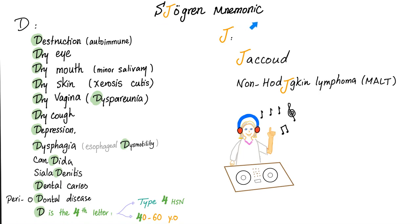Now to the mnemonic. Sjogren's syndrome has the J — please add a D, so you have D-J. Imagine a patient with Sjogren's syndrome with dry eyes and dry mouth standing in front of a DJ. D stands for: Destruction (because it's autoimmune), dry eye, dry mouth, dry skin, dry vagina, dry cough, depression, dysphagia, candida, sialadenitis, dental caries, and periodontal disease.